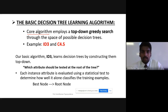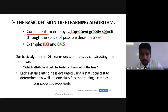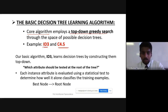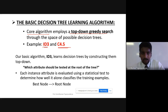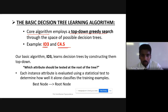Two main algorithms under this decision tree learning algorithm are ID3 and C4.5. This top-down greedy search is exemplified by these two. C4.5 is a successor of ID3. ID3 stands for Iterative Dichotomizer 3 — iterative approach of dichotomization, where dichotomizer refers to something with two values. Our basic ID3 algorithm learns the decision tree by constructing it top-down.